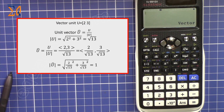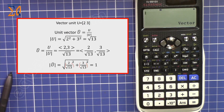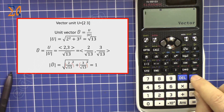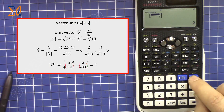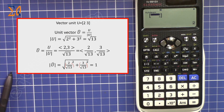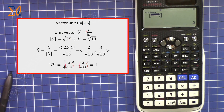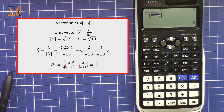A unit vector is a normalization of a given vector such that if you take its magnitude you get 1. Let's fix the formula — there's a parenthesis needed. Say the vector is (2, 3). The unit vector formula — written with a hat — divides each component by the magnitude. The magnitude is the square root of 2² + 3², which is the square root of 13.